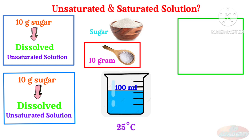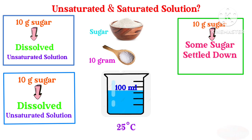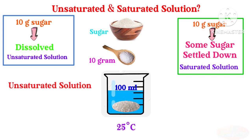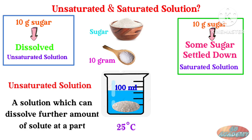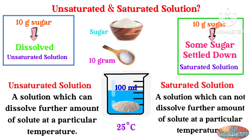Now consider that once again I add 10 grams more sugar to the water, but this time the water dissolves some sugar and some sugar settles down at the bottom. Is it still unsaturated solution? The answer is absolutely no. It is now a saturated solution because the water or solvent has no ability to dissolve a further amount of sugar or solute. Therefore, we define unsaturated solution as a solution which can dissolve further amount of solute at a particular temperature, while we define saturated solution as a solution which cannot dissolve further amount of solute at a particular temperature.